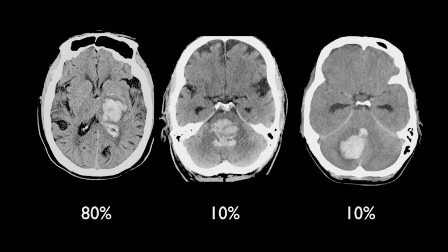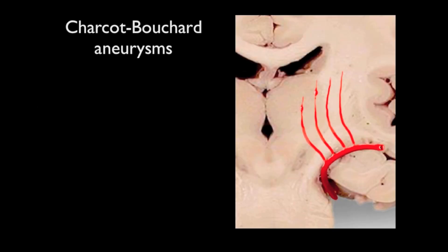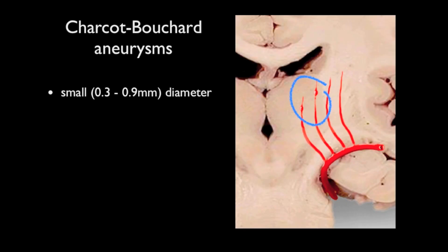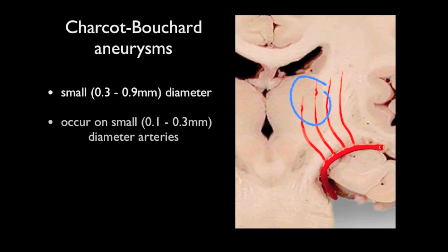This distribution correlates with the distribution of the underlying pathology, which is thought to be so-called Charcot-Bouchard aneurysms or microaneurysms. These are small aneurysms, typically between 0.3 and 0.9 millimetres in size, arising from small perforating vessels whose diameter is 0.1 to 0.3 millimetres.